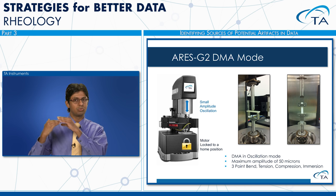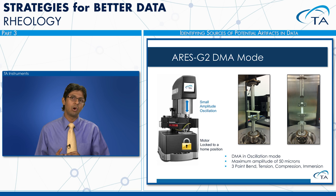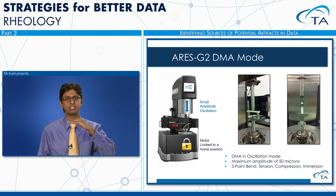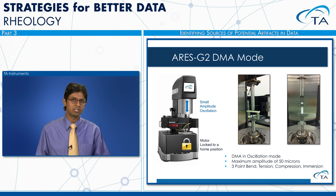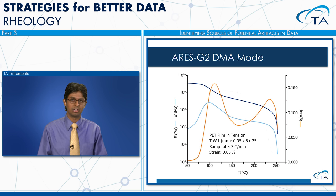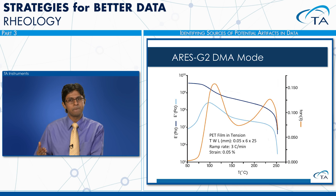Applying small amplitude axial oscillations also enables the ARES G2 to function as a DMA (dynamic mechanical analyzer) for solid materials. By locking the shear motor and actuating only the FRT transducer with up to 50 micron amplitude, solid materials can be tested in three-point bending, compression, and tension modes. A PET film tension example captures transitions evidenced by peaks in tan delta — material property measurements previously requiring a separate instrument like the RSA G2 or DMA Q800.